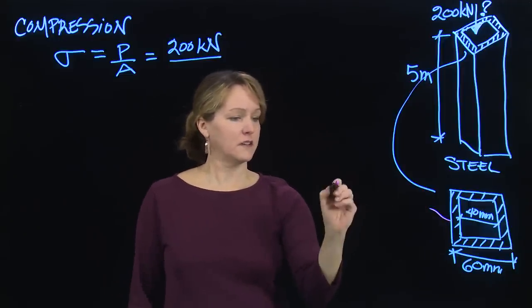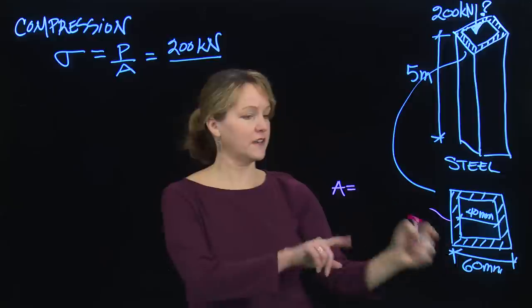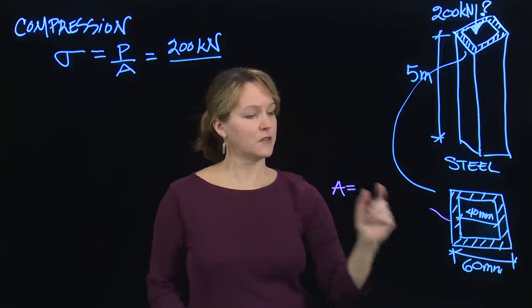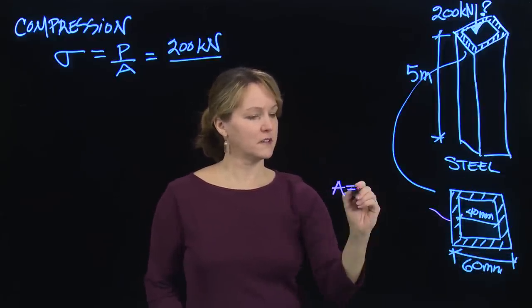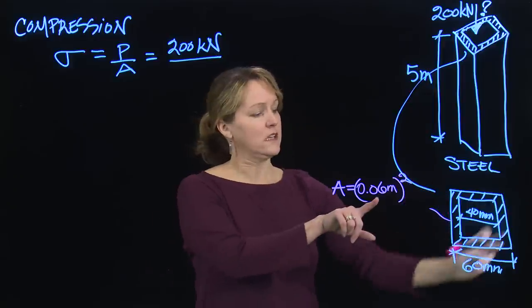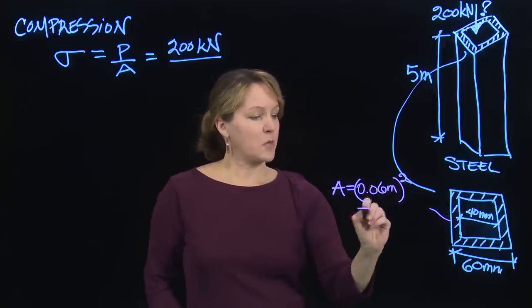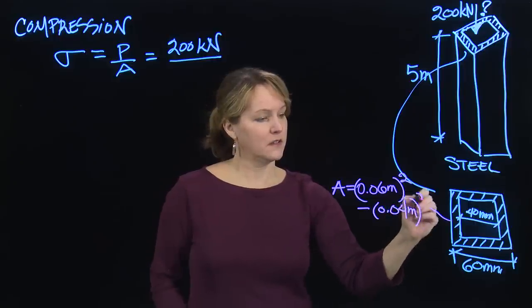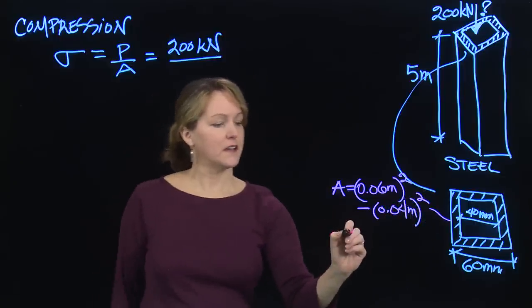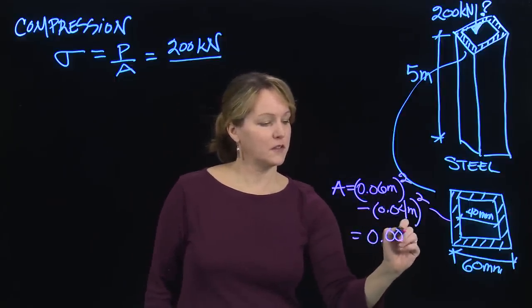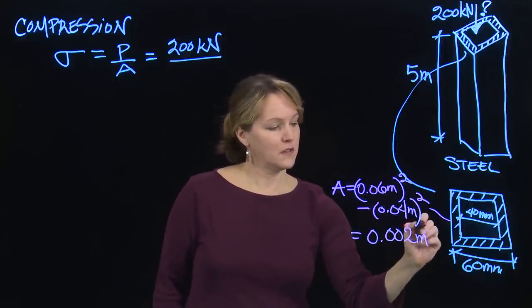For this cross-section, I can figure out the cross-sectional area. It's a square, so I'm going to take the outer, so it would be 60 millimeters. I'm going to switch that to meters, so I'm working all in meters, 0.06 meters, and that'll get squared. That's the area of the outer section, and I'll subtract the area of the inner section, 0.04 squared, and then I can calculate that cross-sectional area, which is 0.002 meters squared.